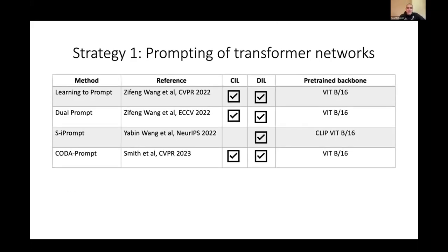The first strategy is prompting of transformer networks, starting with the Learning to Prompt work of Wang et al., closely followed up by Dual Prompt from the same authors. Other papers in this line include S-Prompts, which applies only to domain incremental learning using multimodal CLIP transformer networks, and CODA-Prompt from Smith et al.